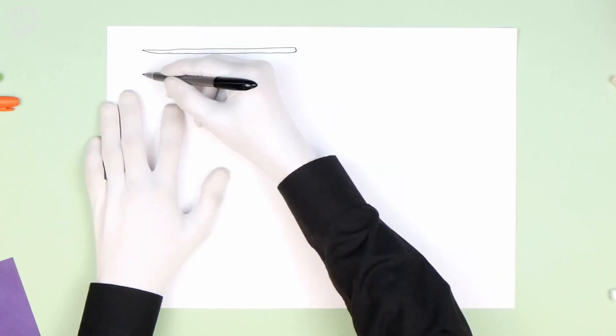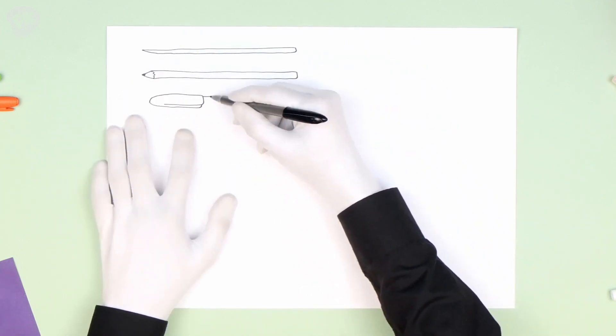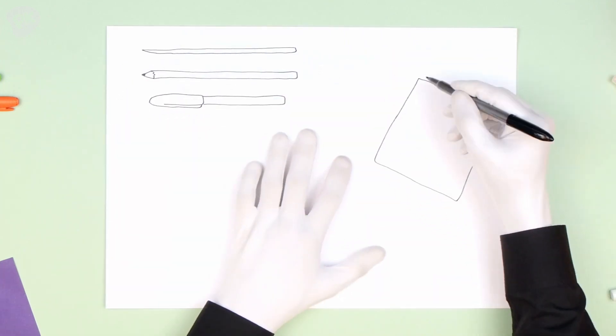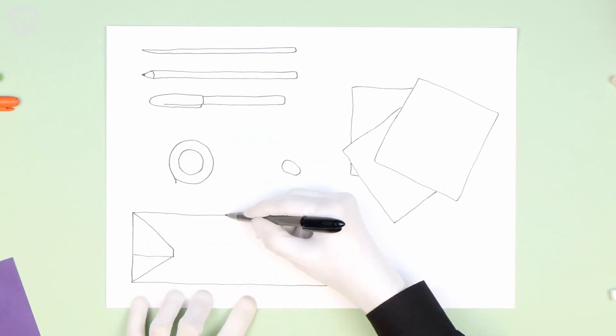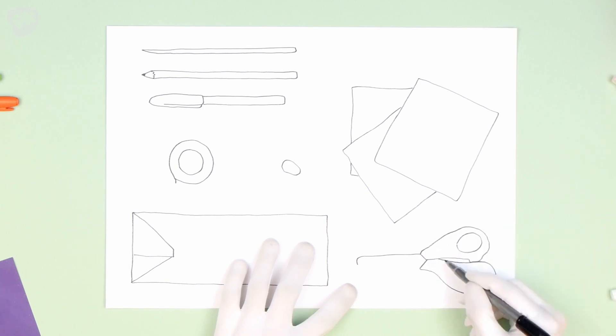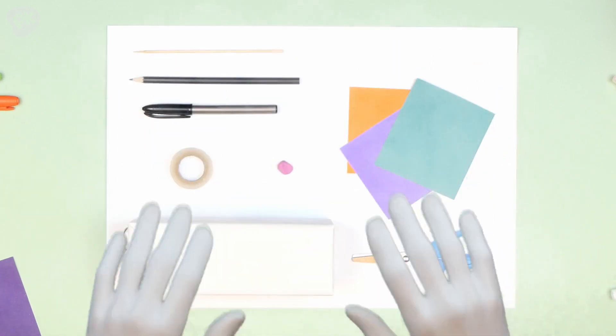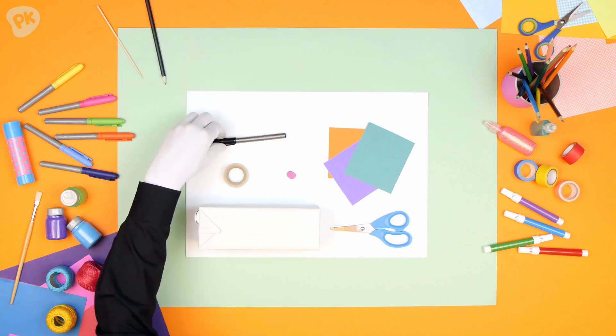A pointy wooden stick, a pencil, colored pens, colored papers, tape, play-doh, a milk box, and blunt scissors. Ta-da! Time to get our science on!